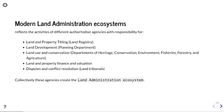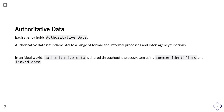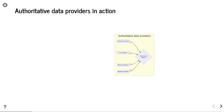Collectively, these are allocated to a range of different agencies that create the whole land admin ecosystem. Each of these agencies holds authoritative data, which is fundamental to a range of formal and informal processes and interagency functions. In an ideal world, this authoritative data is shared throughout the ecosystem using common identifiers and linked data — held once by the authoritative agency and then reused by other agencies as part of their operational processes. This is referred to as the once-only principle.